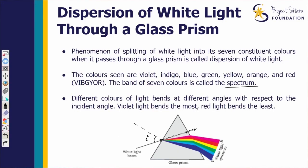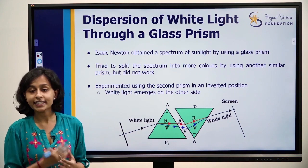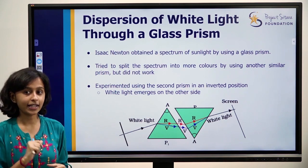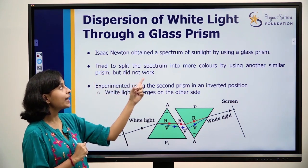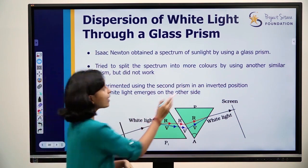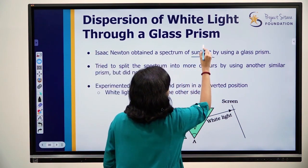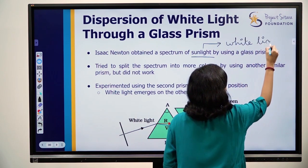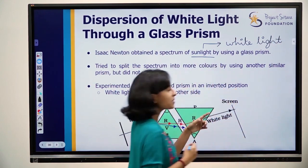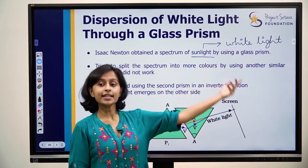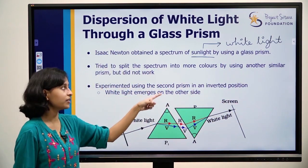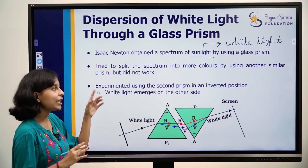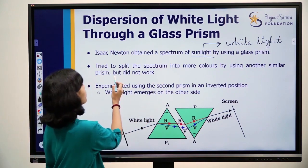Isaac Newton discovered dispersion. You may have already learned that he also discovered gravity. Isaac Newton obtained a spectrum of sunlight by using a glass prism — sunlight is white light. He then tried to further split the seven colors of the spectrum into even more colors using another prism, but he was not able to split again. He tried many different ways, but it did not work.